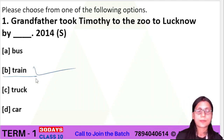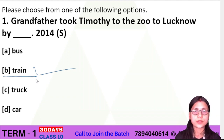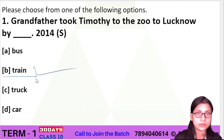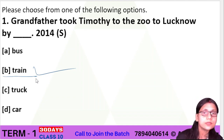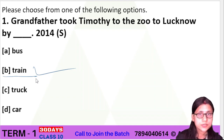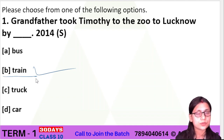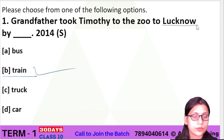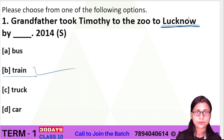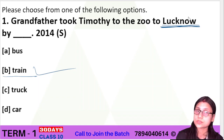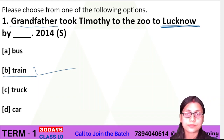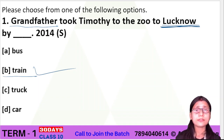When Timothy was young, grandfather kept him at home, but as he grew older he became wild. Timothy is a tiger, and tigers are wild animals. He showed his wildness, and that is why grandfather decided to send him to the zoo at Lucknow. So when the question asks who took Timothy to the zoo at Lucknow, the answer is grandfather.